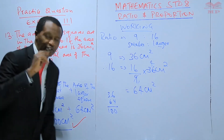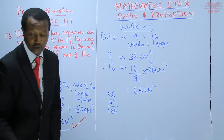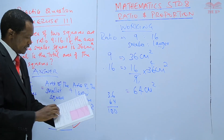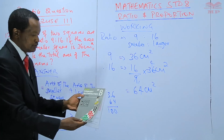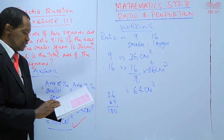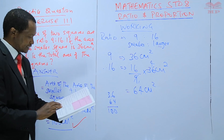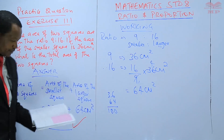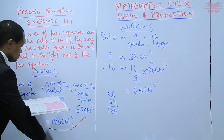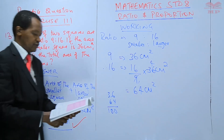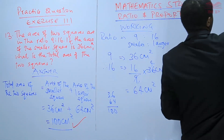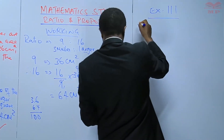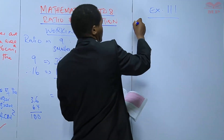Learners, that will mark the end of today's lesson. We've answered question number 13 from the Pupils book. It's your turn to continue exercising. I want you to go and do question number 14. For those of you who do not have this book, I'll write the question here on the board — exercise 111, question number 14.